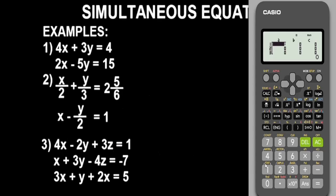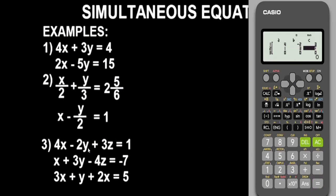Press 2, and as you can see we now have three equations to fill in. For equation 1: the coefficient of 4x is 4, coefficient of minus 2y is minus 2, coefficient of 3z is 3, and the constant is 1. For equation 2: coefficient of x is 1, coefficient of y is 1, coefficient of 2x — that should be 2z — is 1, and the constant is negative 2. For equation 3: coefficient of 3x is 3, coefficient of y is 1, coefficient of 2z is 2, and the constant is 5.